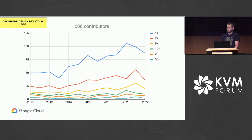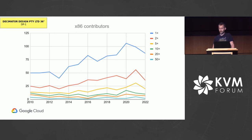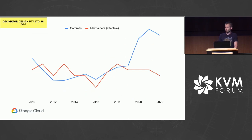Looking at KVM x86 in terms of the number of contributors versus patches merged per contributor gives us a good idea of why latency is a problem. The number of people actively maintaining the code base is roughly flat over the last decade, but the number of overall contributors has roughly doubled. And it's not just one-off patches — while one or two patches here and there account for many contributions, the number of people contributing medium-sized series has also doubled. The drop-off for 2022 will likely be much less sharp by the end of the year.